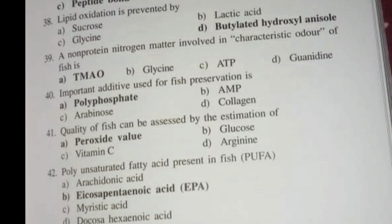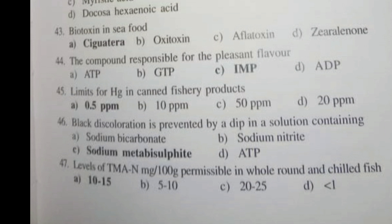Question 41 - Quality of fish tested by the estimation of. The answer is Peroxide value. Question 42 - Polyunsaturated fatty acid present in fish (PUFA) is Eicosapentaenoic acid.